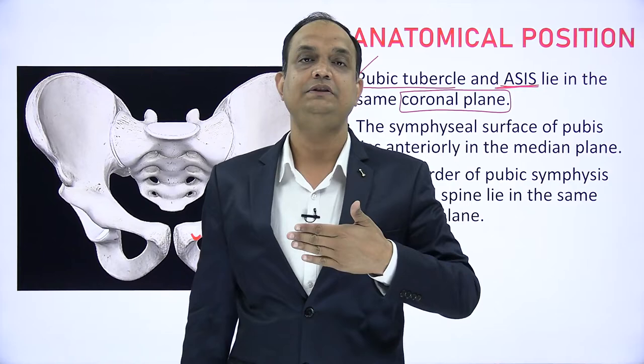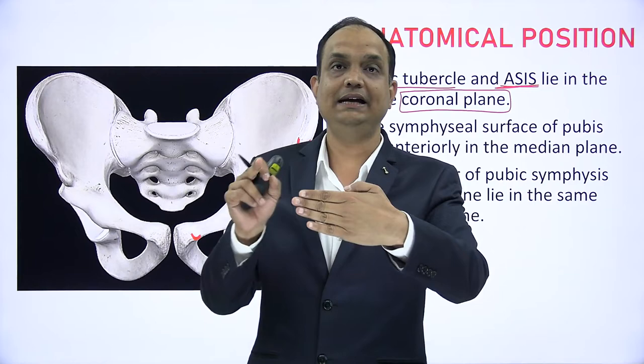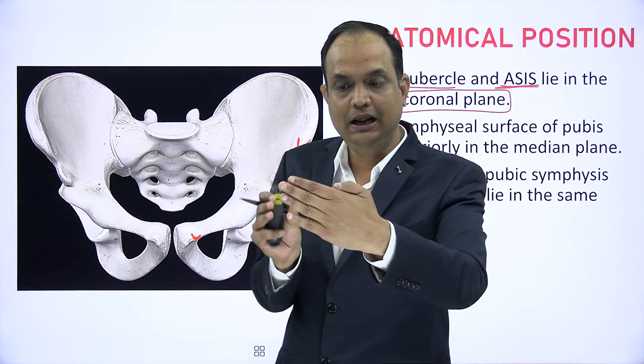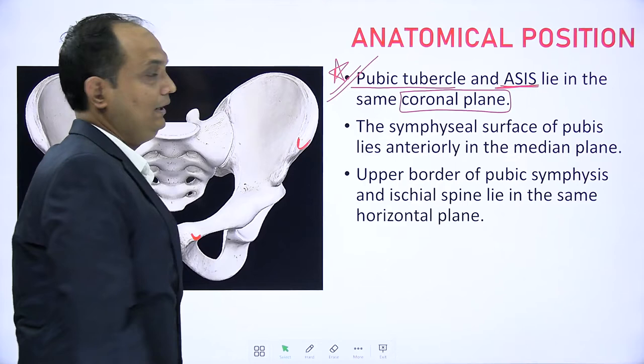The coronal plane is the plane which divides the body into anterior and posterior halves. When you have the hip bone, you have to keep in mind that pubic tubercle and ASIS both must touch a plane which is coronally placed. You can hold a book in one hand and with the other hold the bone, trying to touch both these bony points with the book placed vertically.